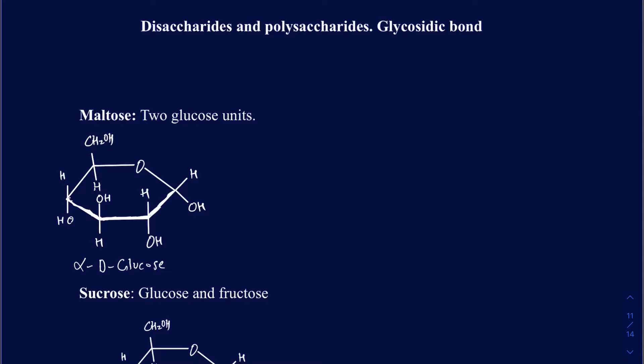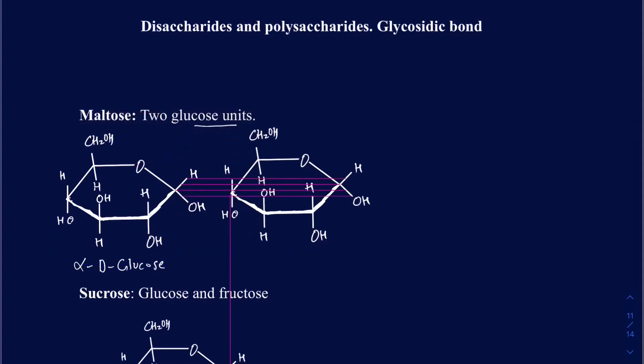I'm going to start out with maltose. Maltose is actually a disaccharide of two glucose units, and the glucose unit used in maltose is going to be the alpha-D glucose. So if I have two glucose units, they're going to be bonding with one another with the help of a glycosidic bond.